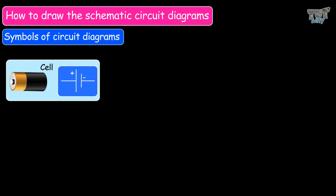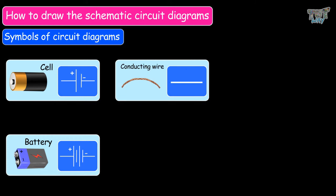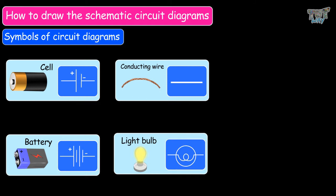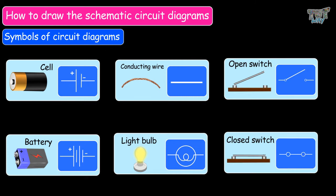This is the symbol of a cell, with one positive end and one negative end. This is the symbol of a battery — we know the battery is a group of two or more cells, so in this symbol there are also two or more cells attached. This is the symbol of a connecting wire. Here we have the symbol of a light bulb. And here we have the symbol of an open switch, and this is the symbol of a closed switch.